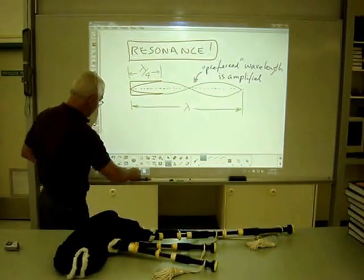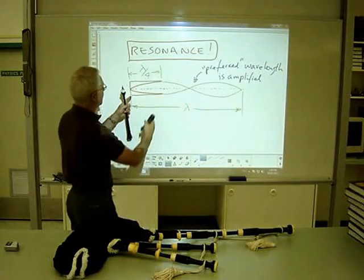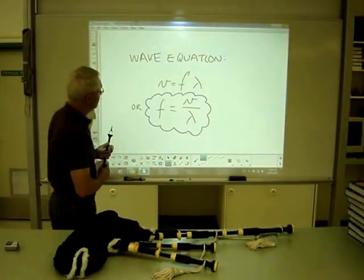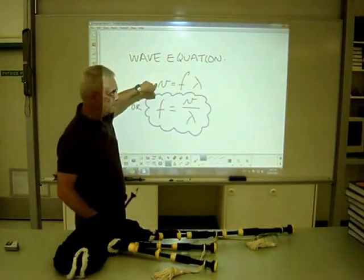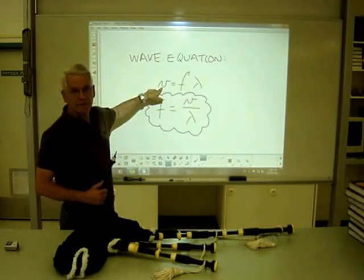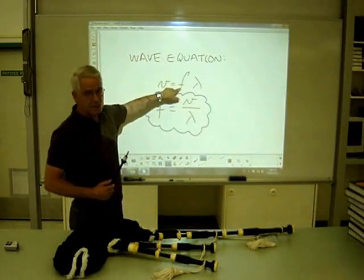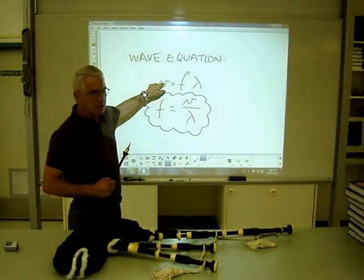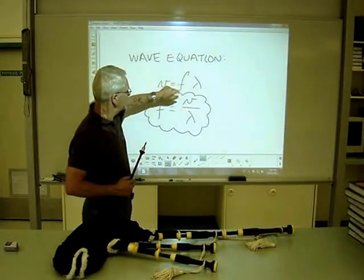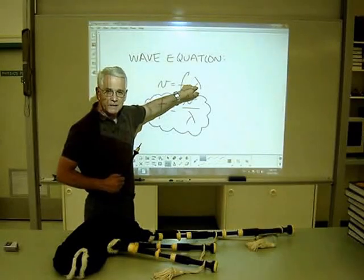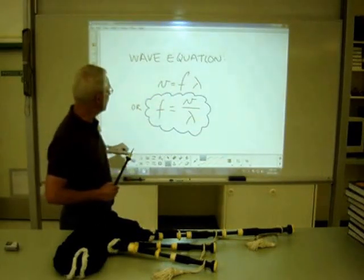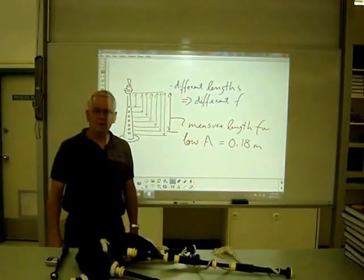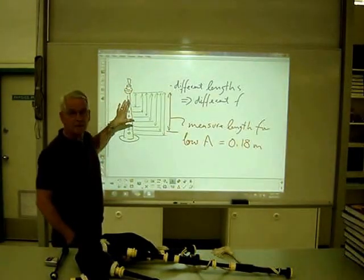So now we have a parameter: lambda is the wavelength. If we consider the full wavelength rather than just this quarter wavelength, the motion of the air is described by the wave equation, which is V equals F times lambda, where V is the speed of sound in air, F is the frequency of the vibration, and lambda is the wavelength. When we're playing a musical instrument, we can't change the velocity of sound in air too easily, so we're looking for different frequencies, and we can change lambda by changing the length of the pipe in which the wave is resonating.